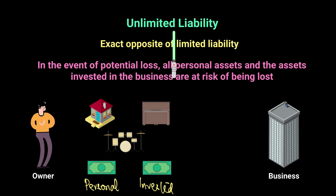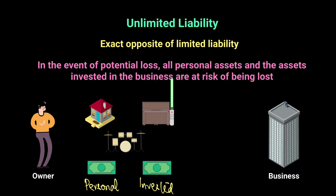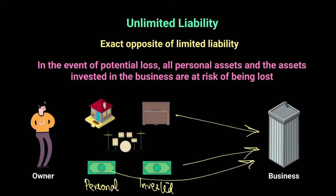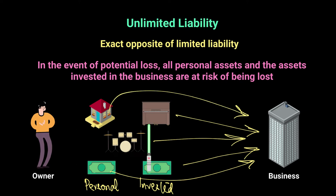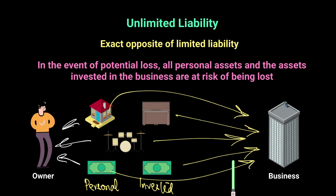Unlimited liability means it's not limited to the amount of investment you made in the business. If the business fails, all personal assets and assets invested in the business are at risk of being taken away. Everything is linked to the owner, so everything is linked to the business. If the business has losses it cannot cover with the invested amount, whoever is coming for their money — the banks, the creditors — they're not going to stop at the money invested in the business; they will take it from your personal pockets as well. That is unlimited liability.